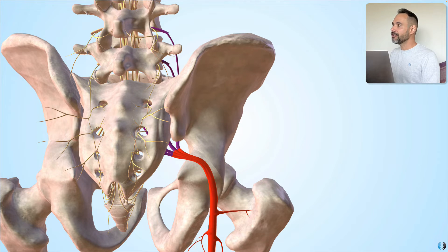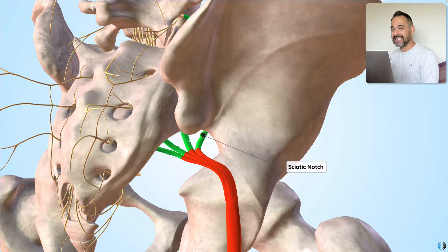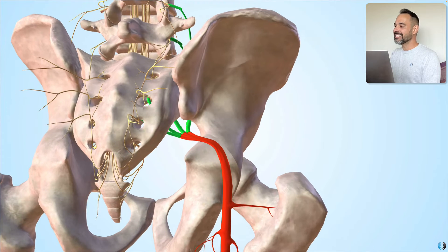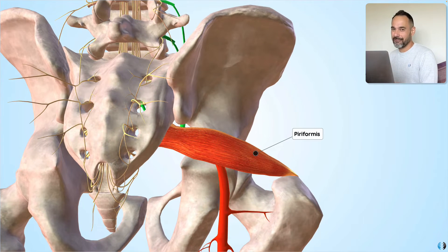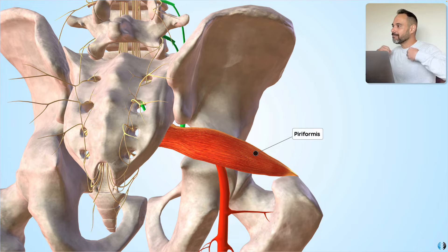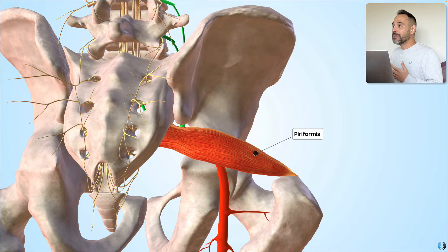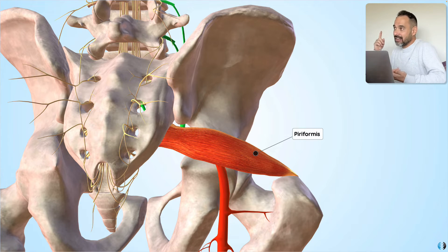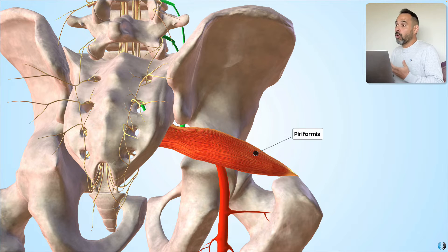The sciatic nerve runs through an important part of the pelvis called the sciatic notch, and then it runs underneath — or deep to — a super important muscle: the piriformis muscle. Now, if you believe everything you see on social media, you might think the piriformis muscle is always compressing the sciatic nerve, causing pain, pins and needles, and numbness down the leg. However, research has shown there are loads of other structures — such as the gemelli muscles, the obturator muscles, the ischiofemoral joint, and the sacrotuberous ligament — all present within the gluteal region that could have an impact on the sciatic nerve.